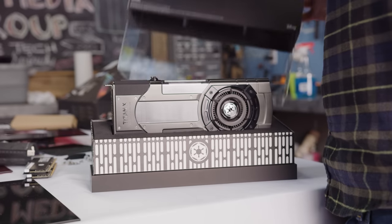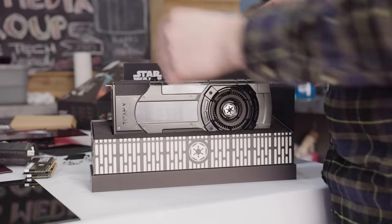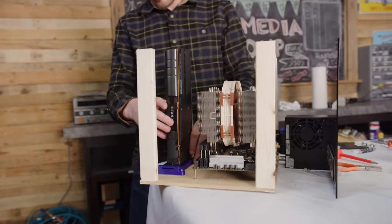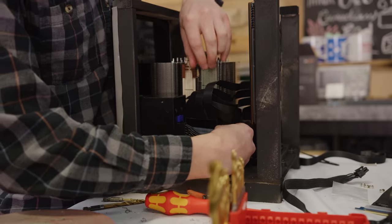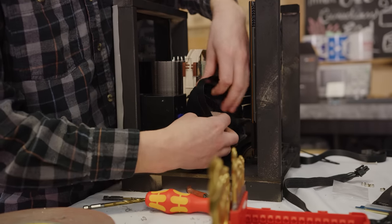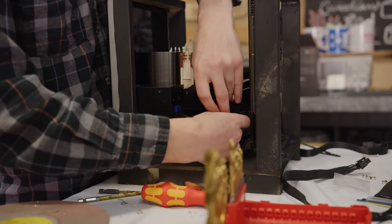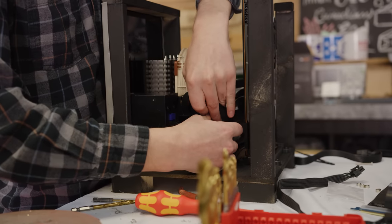Now the centerpiece of this build is our Star Wars Titan XP graphics card, so we opted to give it a full frontal mount, which is not nearly as dirty as it sounds. It just means that we used a PCI Express extension to mount it in a vertical position front and center right here.